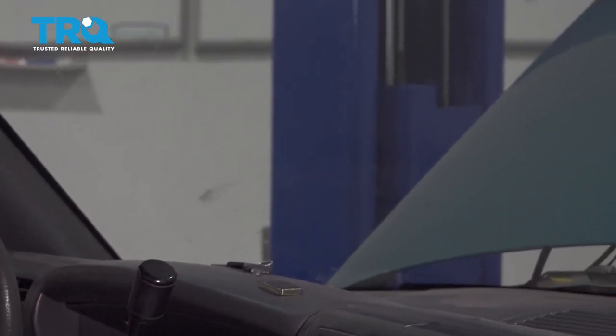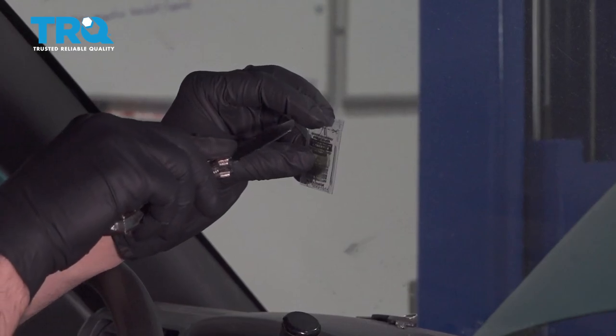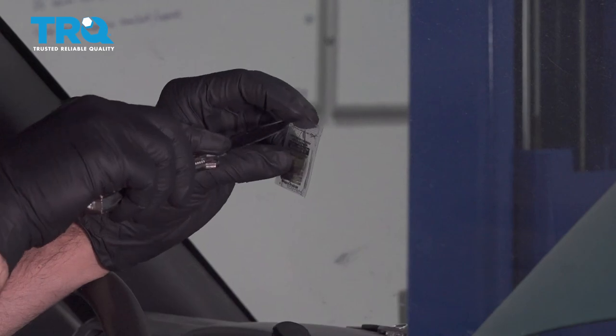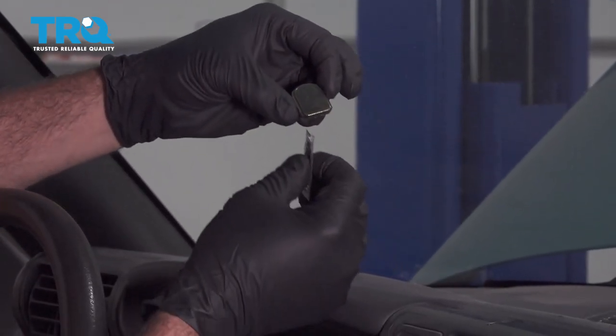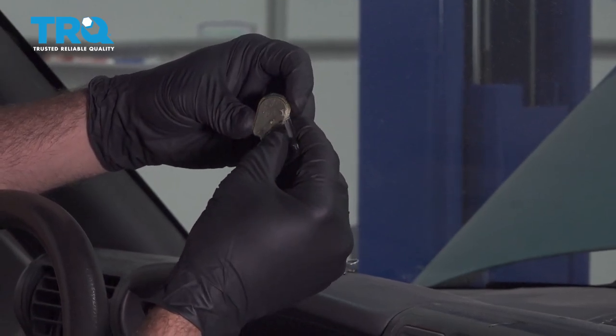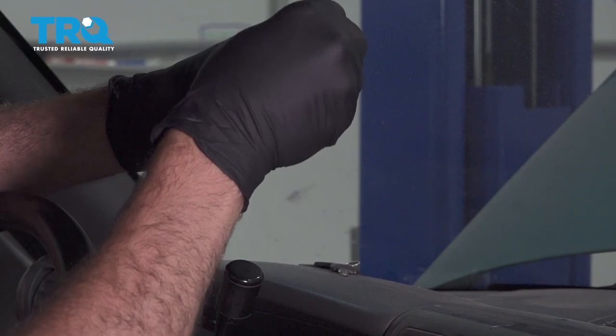Now we're going to take our adhesive and I want to cut this open. You can use your scissors or whatever you have. I'm going to take that mirror base and we're going to apply the adhesive to the mirror base.